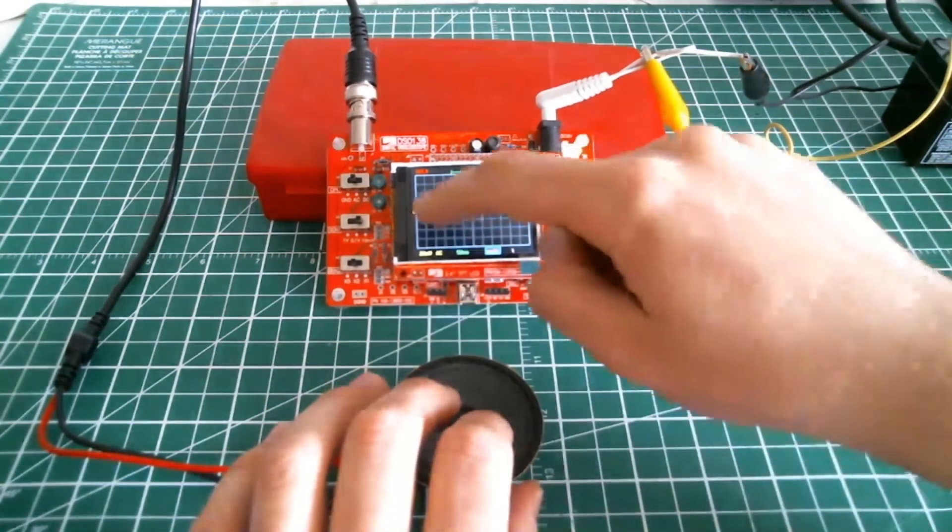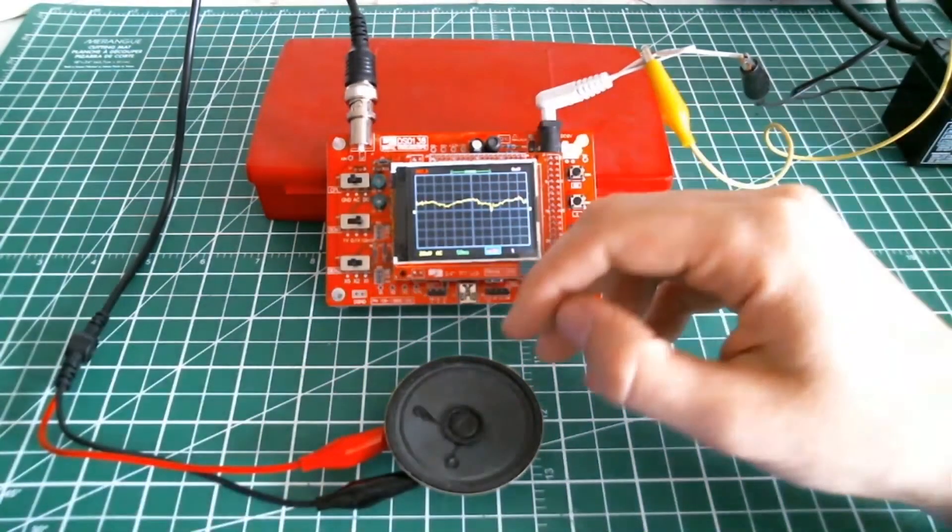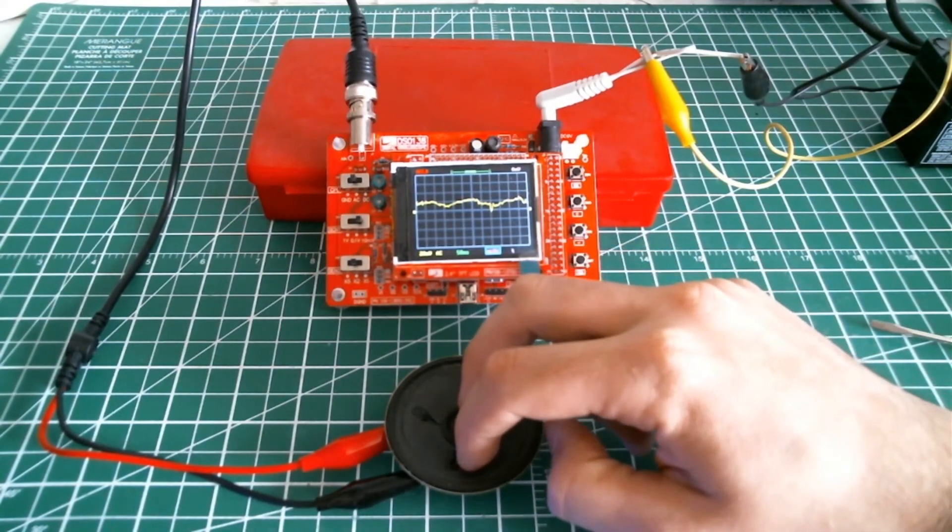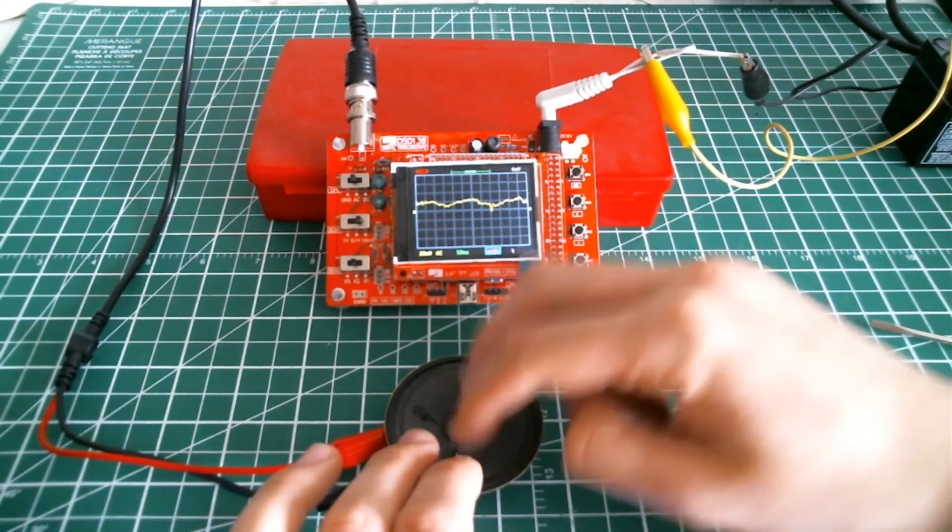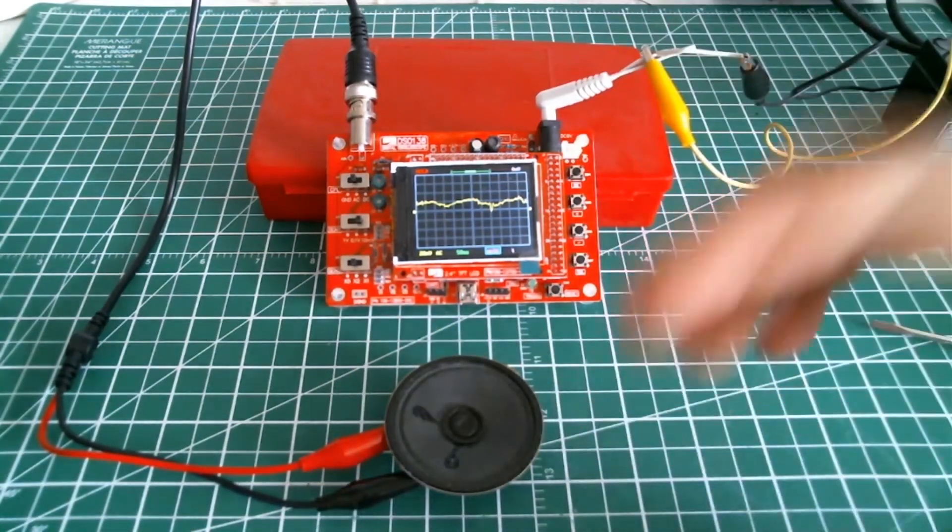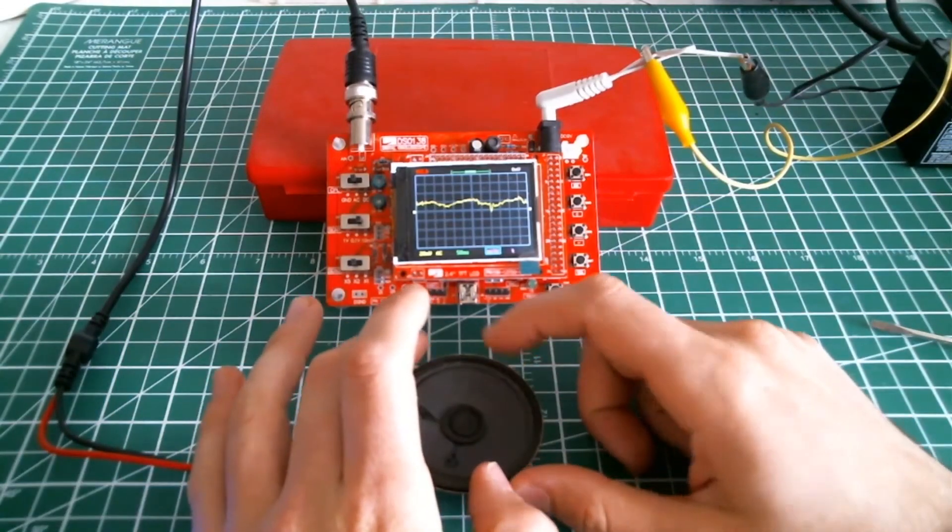So you see there's like a frequency created here because we're generating a positive voltage when we push, and when we let it up, we generate a negative signal. So we're creating AC or audio signal with this little speaker.